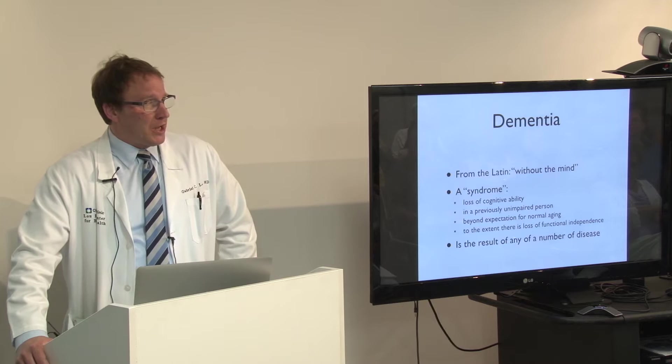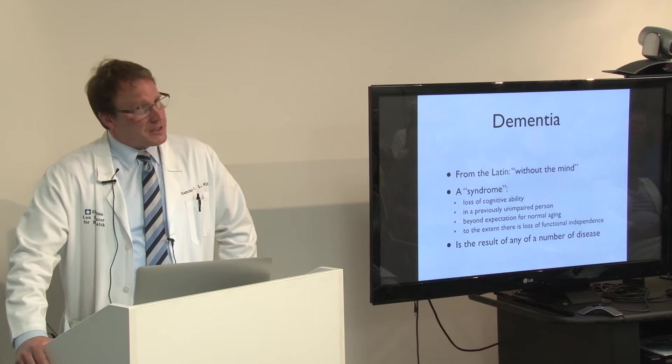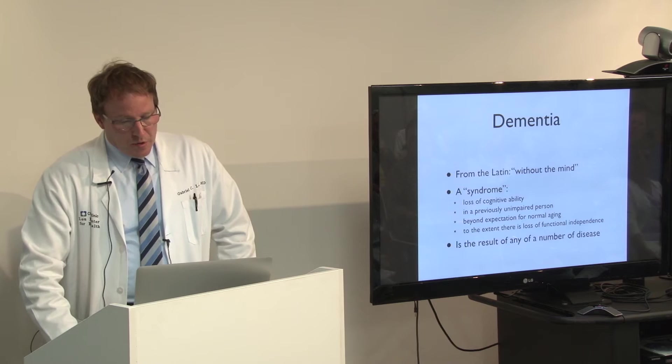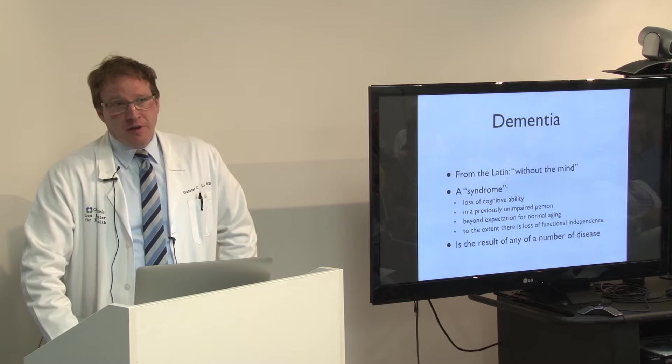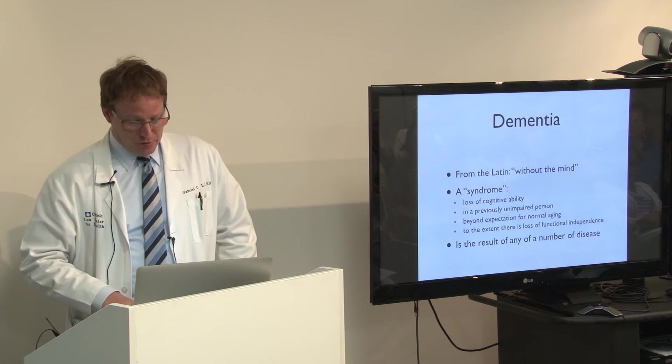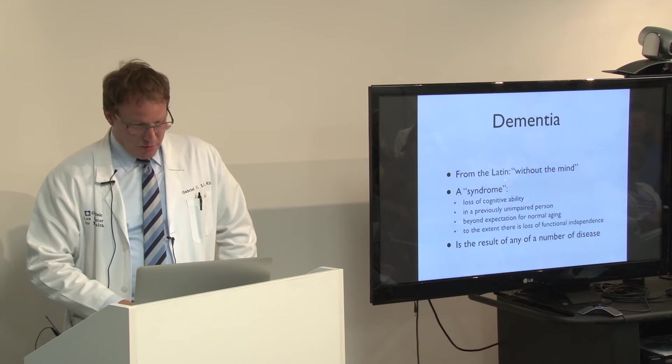The difficulties are severe enough to cause a loss of functional independence. So if somebody's working, they can't work anymore. If they used to live independently, manage their finances or their medications and they can't do that anymore, then we talk about a dementia. What's important is that dementia is not a diagnosis in itself — it's just a description of the severity of the disease, and is obviously caused by something else, an underlying disorder, and there could be many of these.